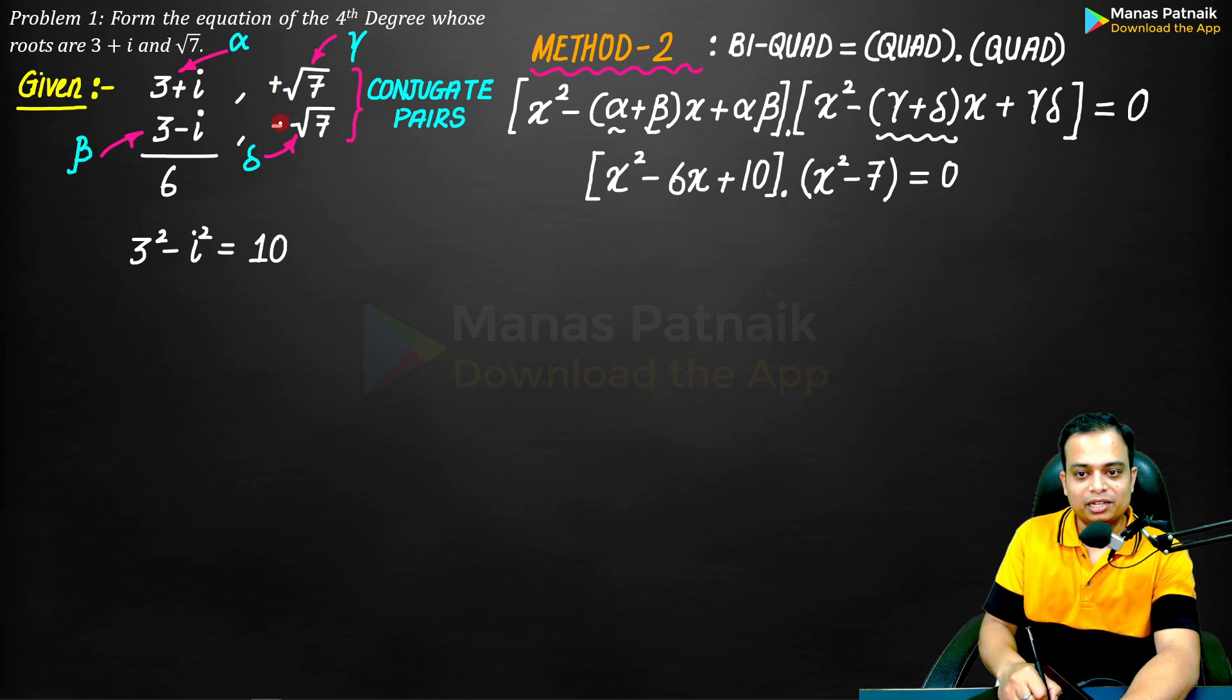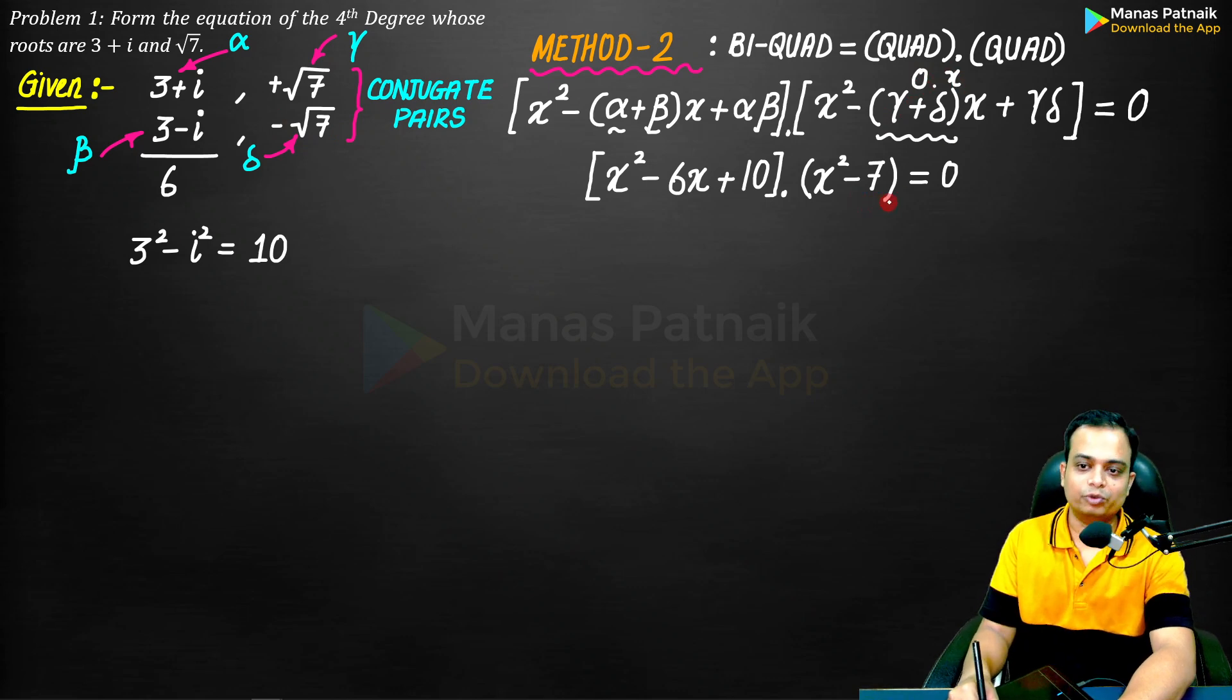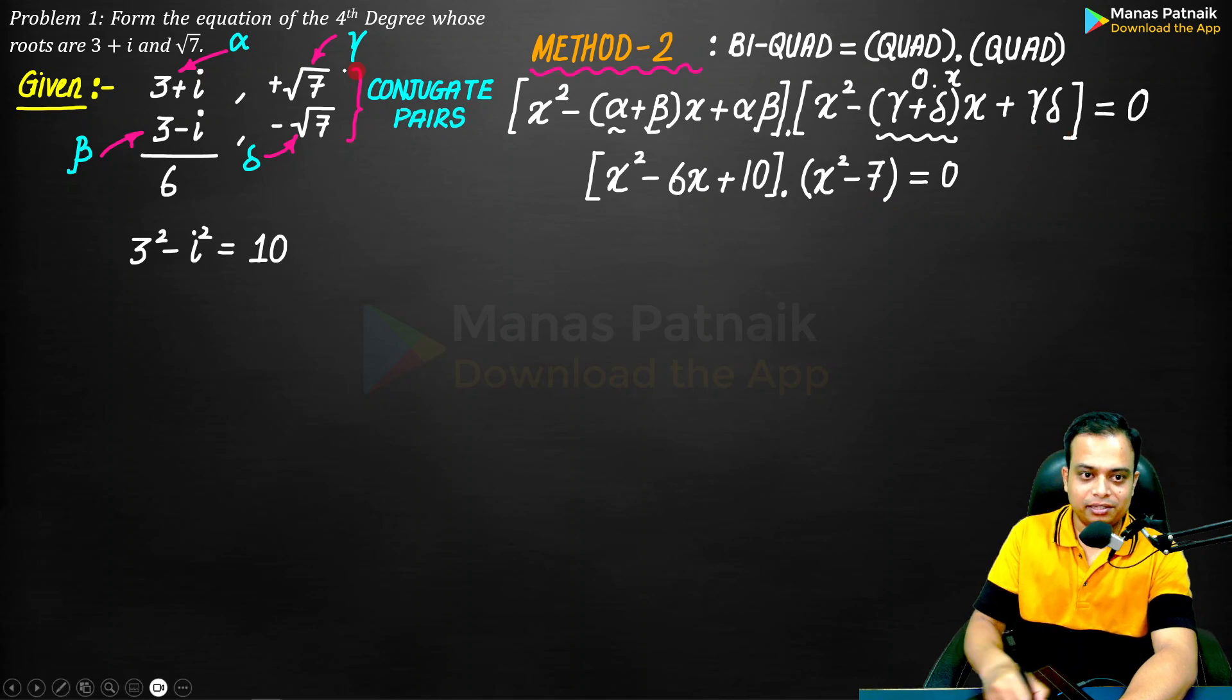While the other result is plus root 7 minus root 7. When you add these two roots they'll cancel each other out, so this is going to be 0. 0 into x is 0, so that's why there is no x term over here. Secondly, when you multiply these roots, root 7, root 7 becomes 7, but there is positive and negative sign, so this becomes minus 7.